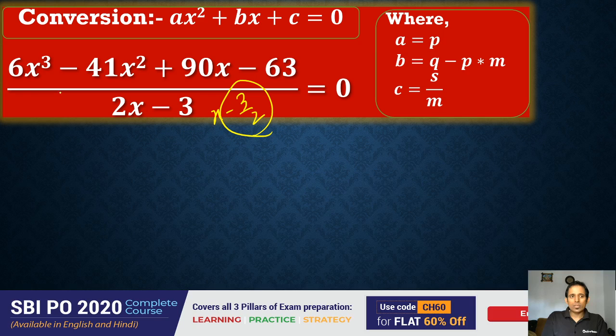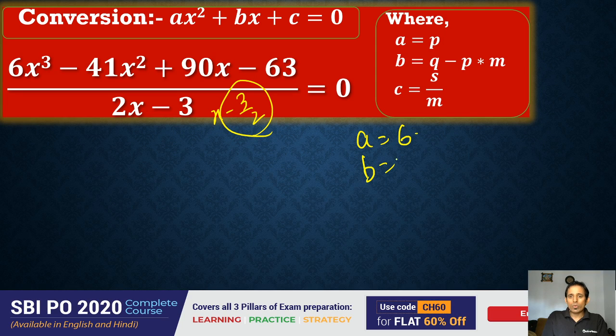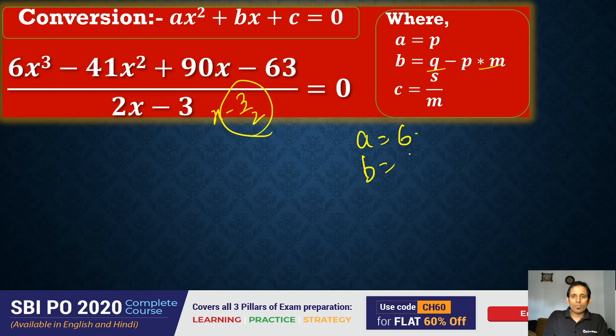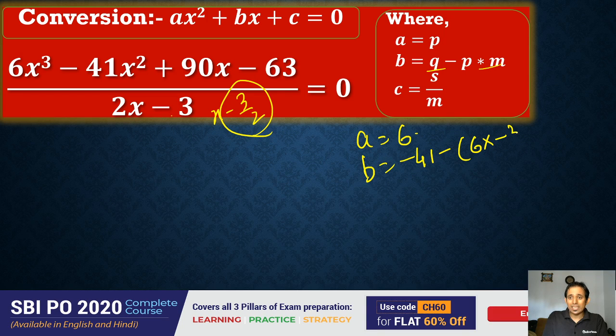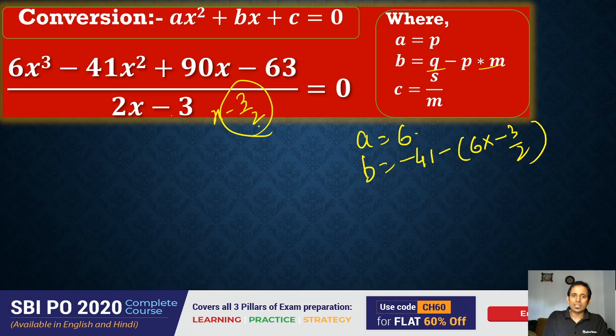Now listen. For this equation, what is p? a equals p. So p is equal to how much? That is equal to 6. b equals q minus pm. q is what? Minus 41. And that minus pm. So pm is 6 into m is what? Minus 3 by 2, because this is the m form. So this will cancel out.